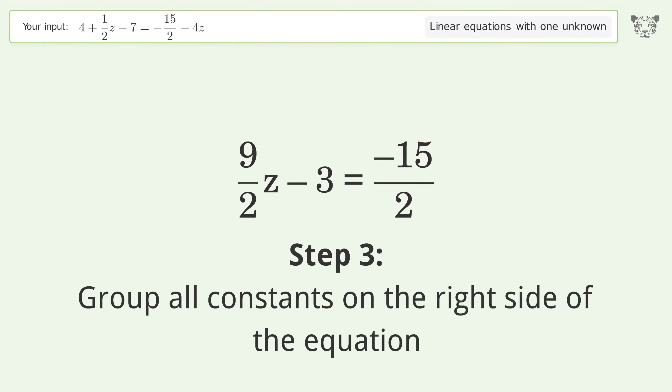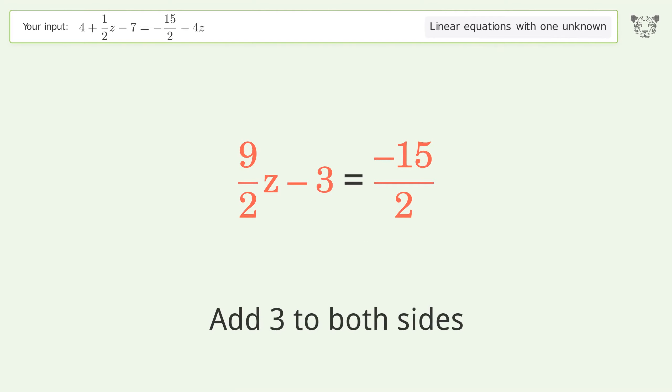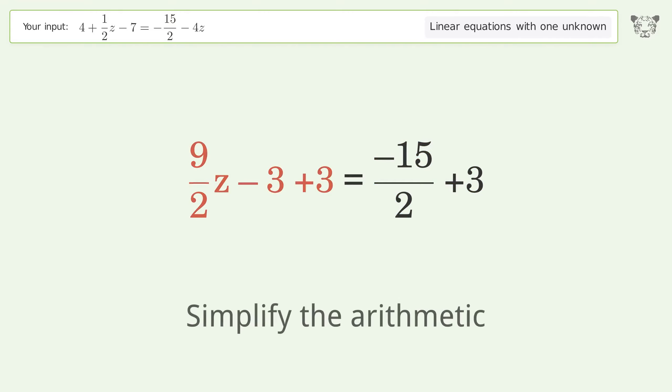Group all constants on the right side of the equation. Add 3 to both sides. Simplify the arithmetic.